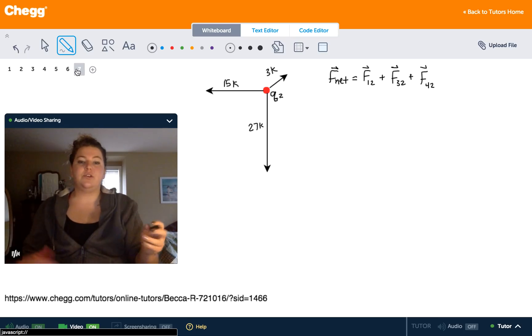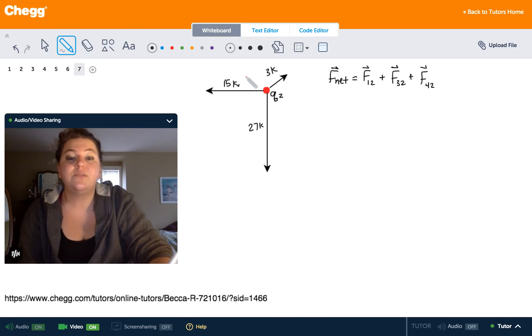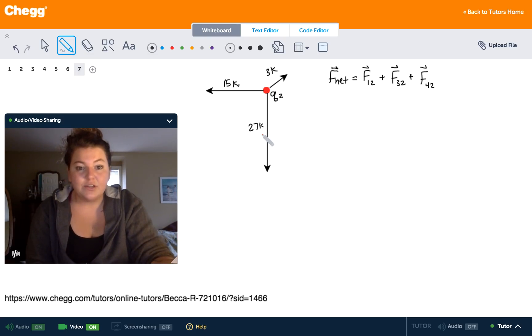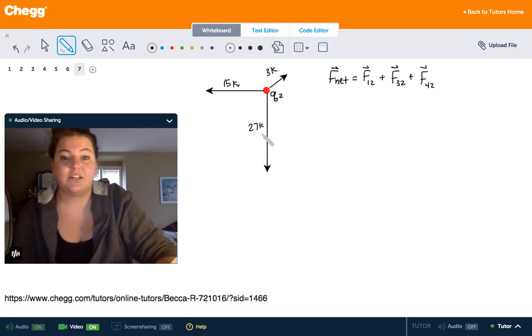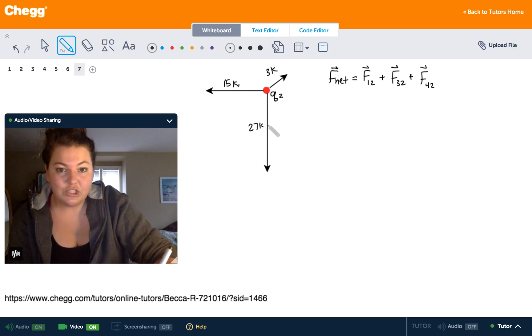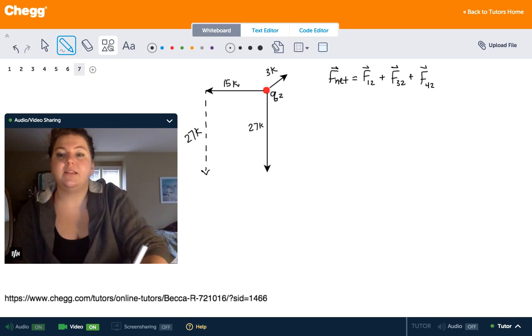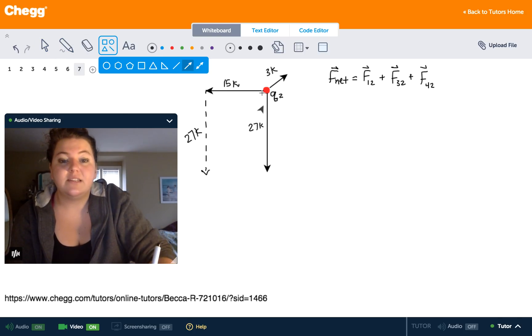All right, so let's zoom in on that q2 and kind of take stock of what we have so far. We know that the net force is going to be the addition of these three vectors right here. But we can't just add 3k plus 15k plus 27k and have that be our answer. Because remember, these are not scalar quantities. These are vectors and they have direction. And that means we need to add them like vectors. So the easiest way to do that is to focus on these two vectors right here. And we're going to add these two vectors together. And what we're going to do first is we're just going to shift this 27k right over here because we want to add vectors head to toe. So we have a 27k right there. And that means that the resulting vector of this addition is going to be this vector right here.